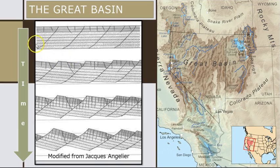Over the past 16 million years or so, this region has experienced intense crustal extension as tensional tectonic stresses have stretched the crust to about twice its original width. This has resulted in the formation of a repeated series of wide valleys, also called basins, separated by mountain ranges, giving this desert its geologic name: basin and range.